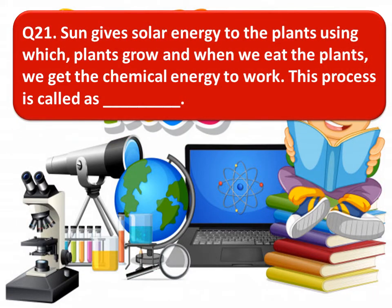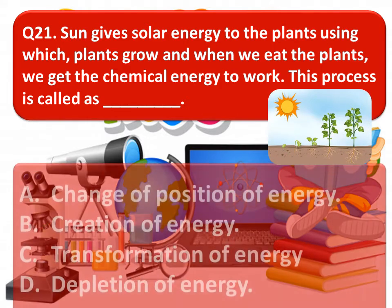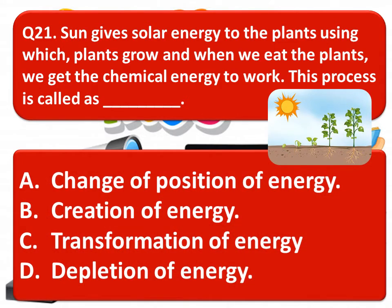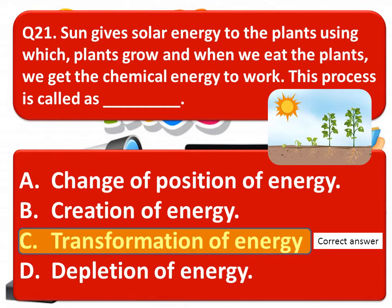Question 21: the sun gives solar energy to plants, using which plants grow, and when we eat the plants we get chemical energy to work. This process is called — Option A: change of position of energy, Option B: creation of energy, Option C: transformation of energy, Option D: depletion of energy. The correct answer is Option C — transformation of energy.